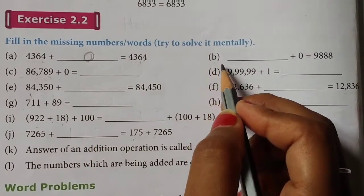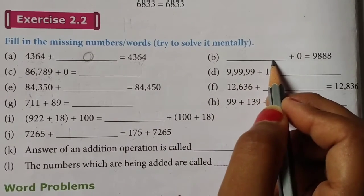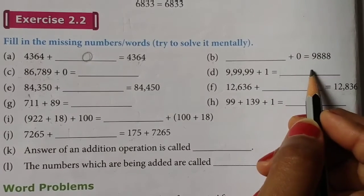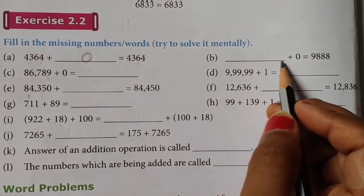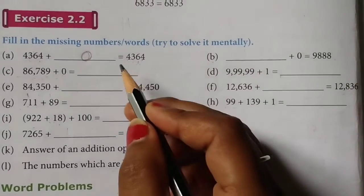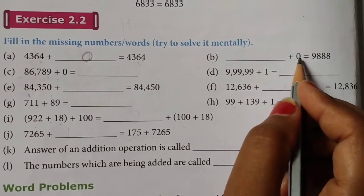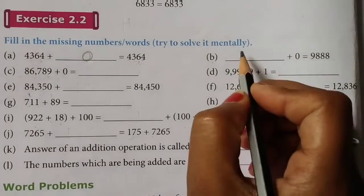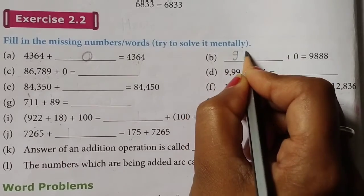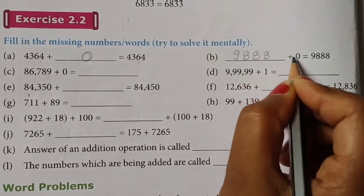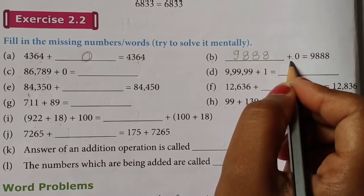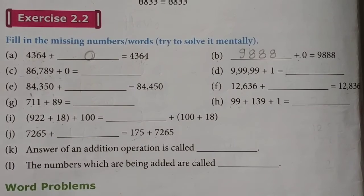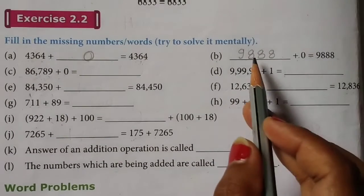Next — यहाँ देखिए, first में missing दिया है, blank plus 0 equals 9,888. यहाँ पर ऐसा कौन सा number आएगा जिसमें हम 0 add करेंगे तो same number मिलेगा? जो answer में दिया है वही number हम यहाँ write करेंगे — 9,888 plus 0 — क्योंकि किसी भी number में 0 add करते हैं तो वह number change नहीं होता, उसकी value नहीं बदलती। Same number यहाँ भी आएगा।